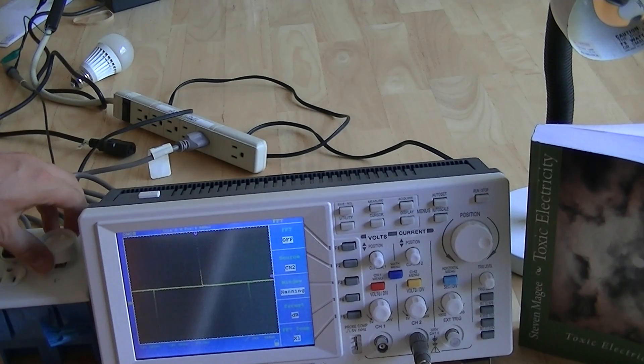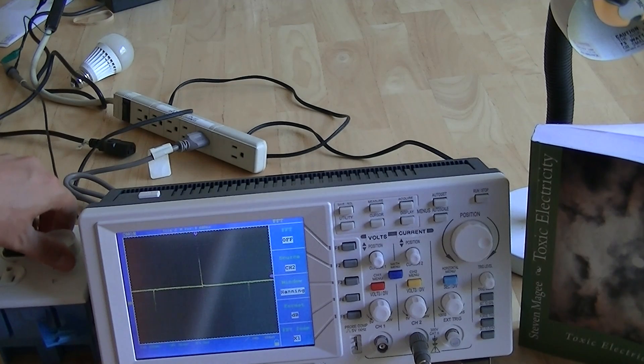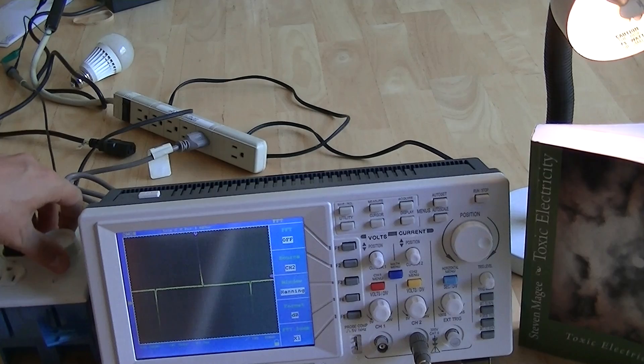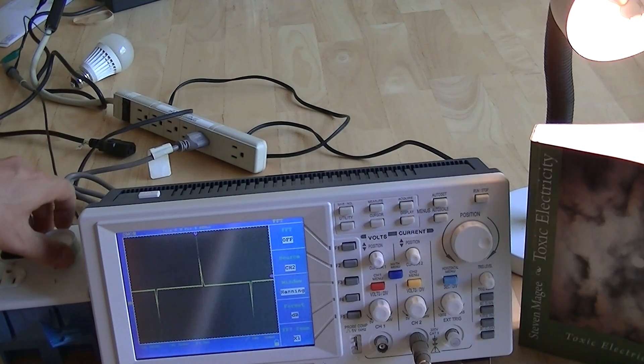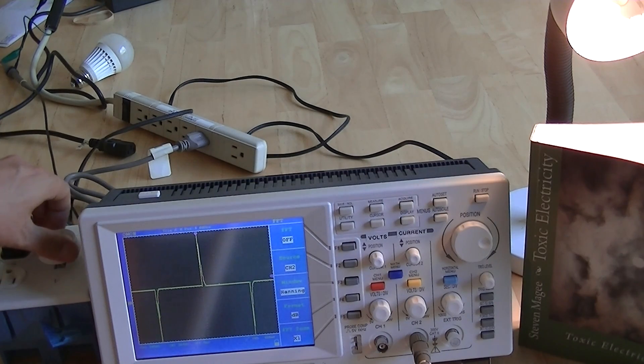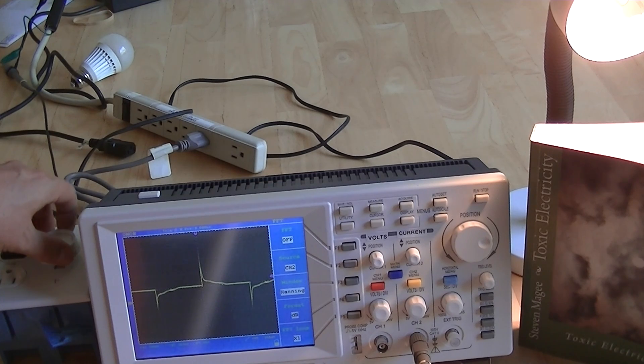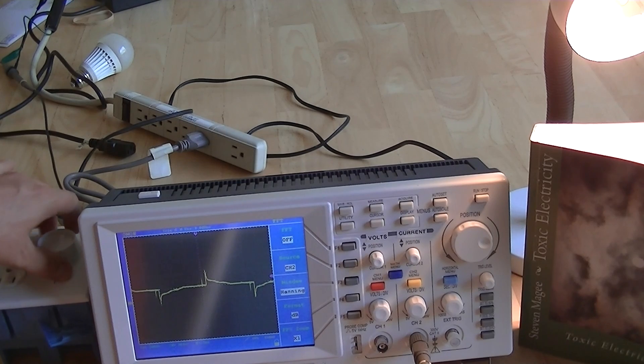So this is an undesirable product from the point of harmonics, because those current spikes are very abnormal for loads to be taken from the AC electrical system and will be contaminating the AC electrical system. So we're back on to full brightness.